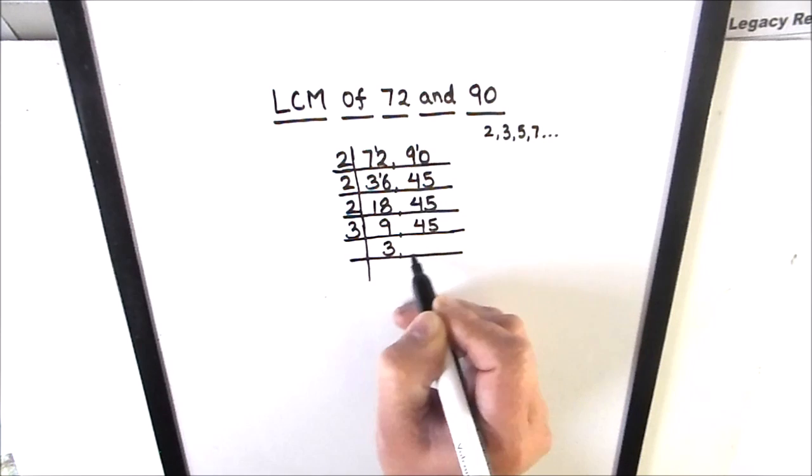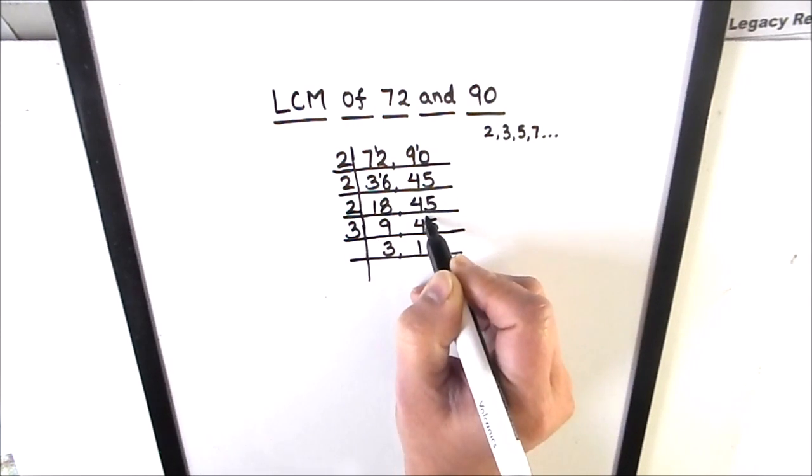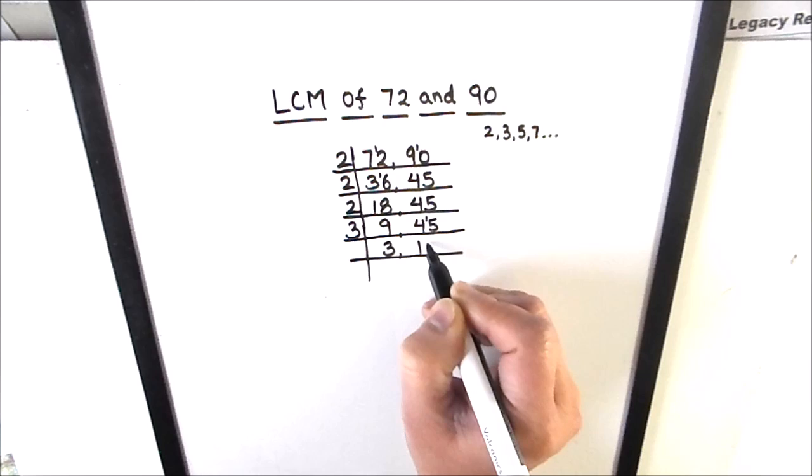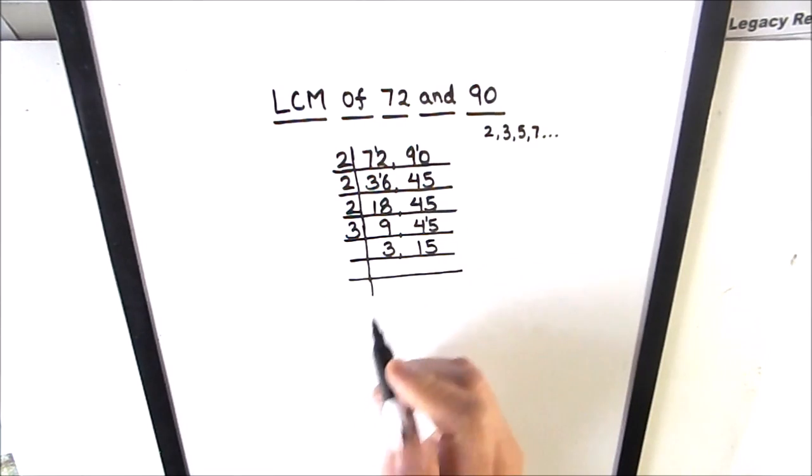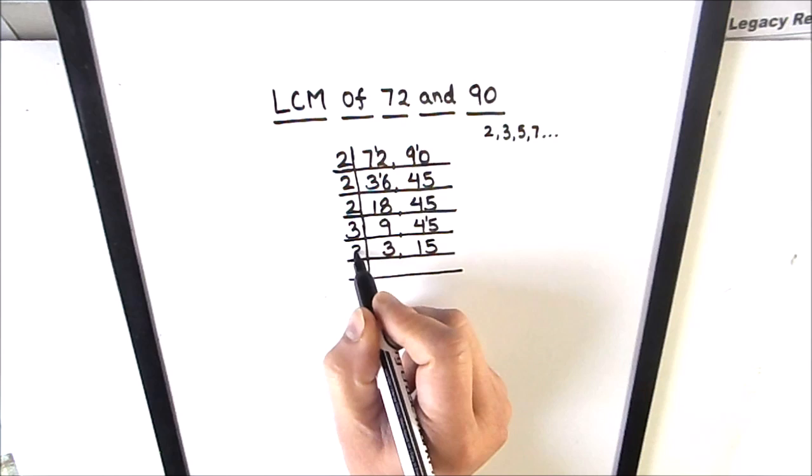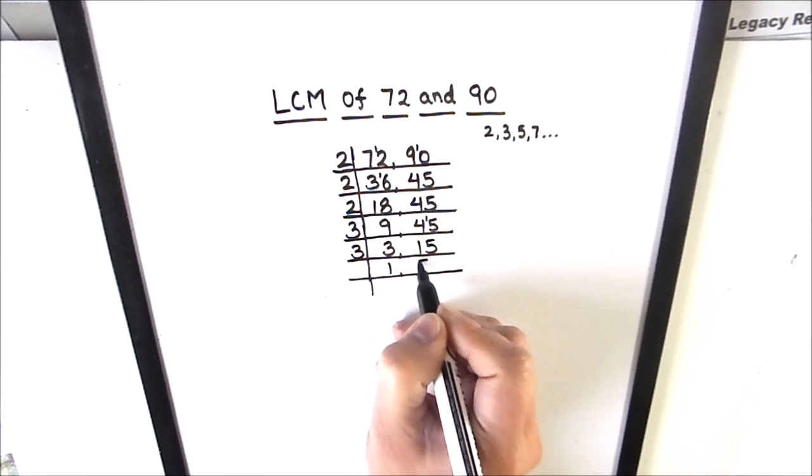3 times 3 is 9, 3 times 15 is 45. Now 3 and 15 both are divisible by number 3: 3 times 1 is 3, 3 times 5 is 15.